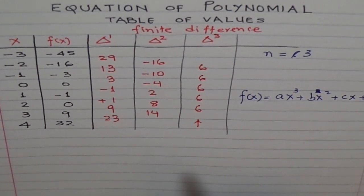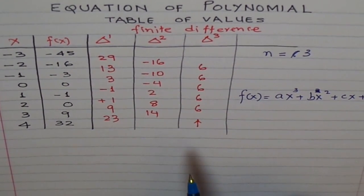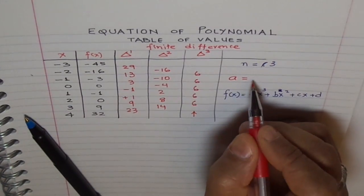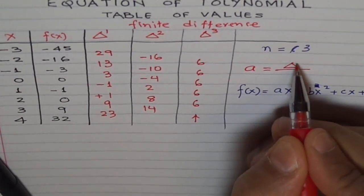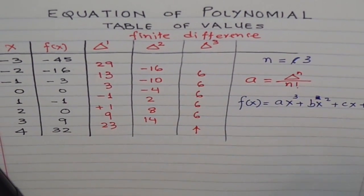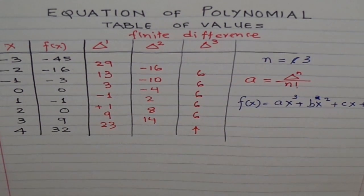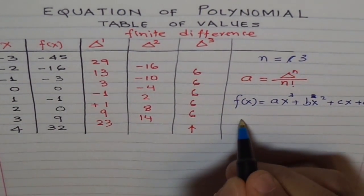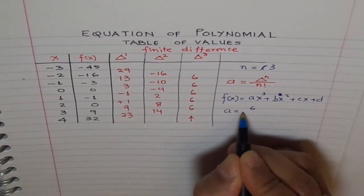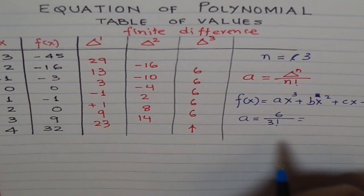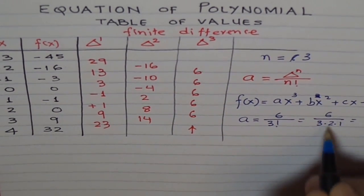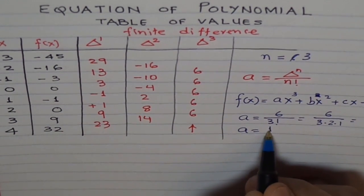How to find that? Well, A is very simple to find from the finite difference. The formula is: A equals the constant finite difference divided by N factorial. In our case, the 3rd finite difference was constant, so A equals 6 over 3 factorial. 3 factorial is 3 times 2 times 1, which is 6. So 6 over 6 is 1, giving us A equals 1.